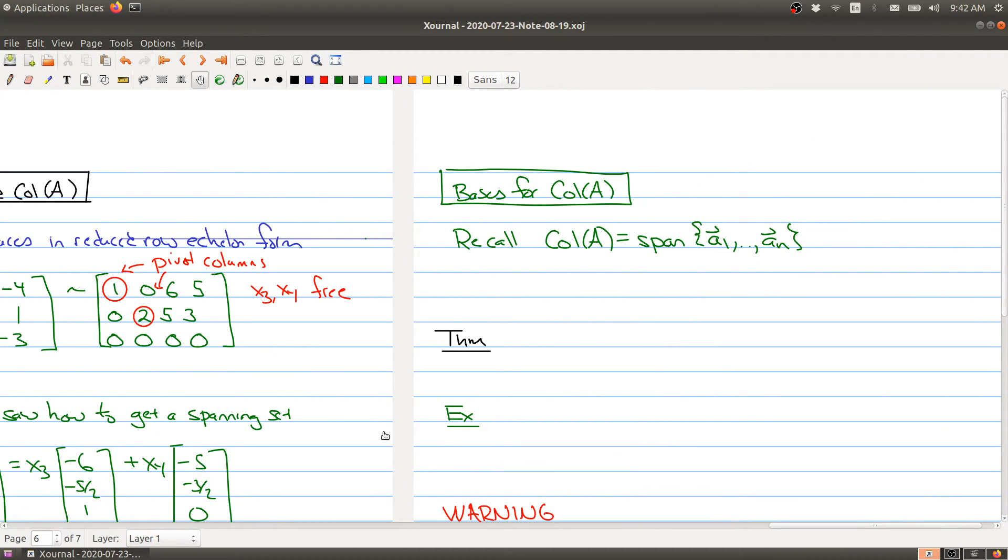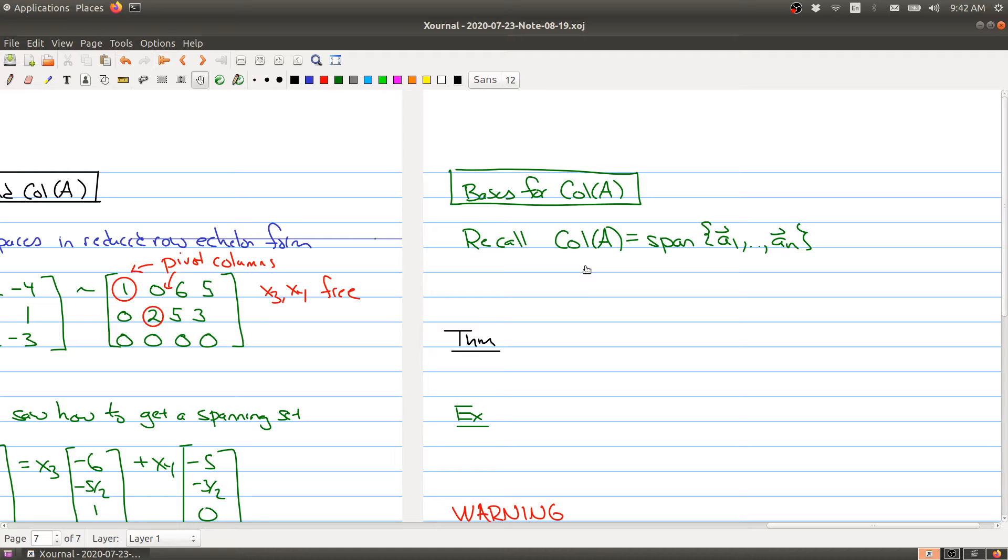What about the column space? Recall that the column space is the span of the columns. By the spanning set theorem, what you need to do is throw out linearly dependent vectors.